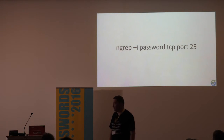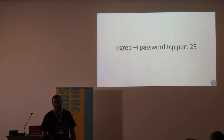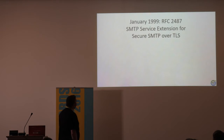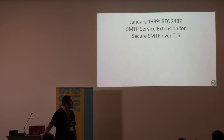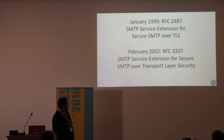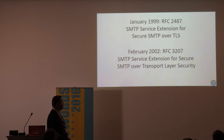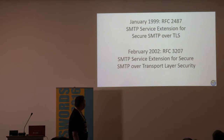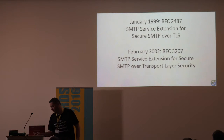If you tell people not to send passwords by plain text, it ain't going to work — that's my simple opinion. So back in January 1999, RFC 2487 was published: SMTP service extension for secure SMTP over TLS. And in February 2002, that was replicated and we had RFC 3207, the SMTP service extension for secure SMTP over transport layer security.